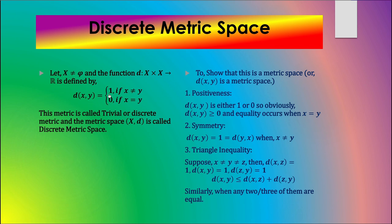In this example, the space may be anything — just a non-empty set. If the points are different, the value of the metric will be 1, and if the points are equal, it is 0. Intuitively, if two points are equal the distance is 0, but if two points are different the distance is fixed to be 1 — even if they are actually 5 units apart, we still write it as 1.